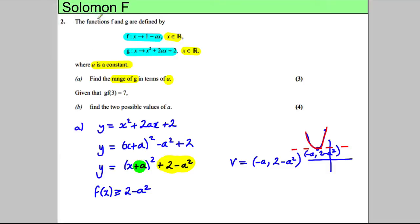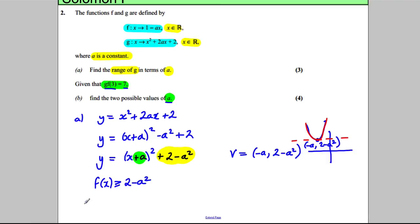Okay, for the next part we are told that G of f of 3 is equal to 7, find the possible values of a. So we're going to work out G of f of 3, make it equal to 7, and see what a is as a result of that.